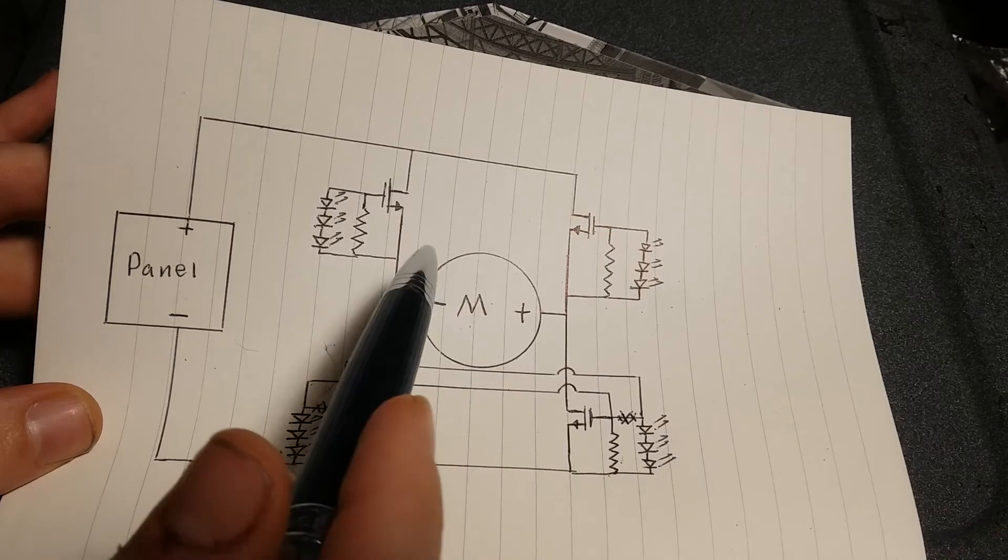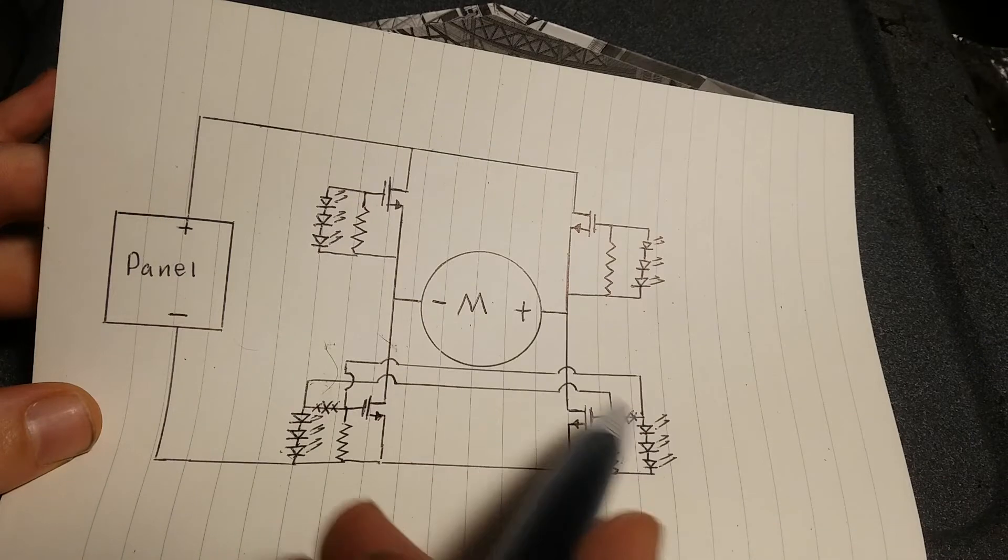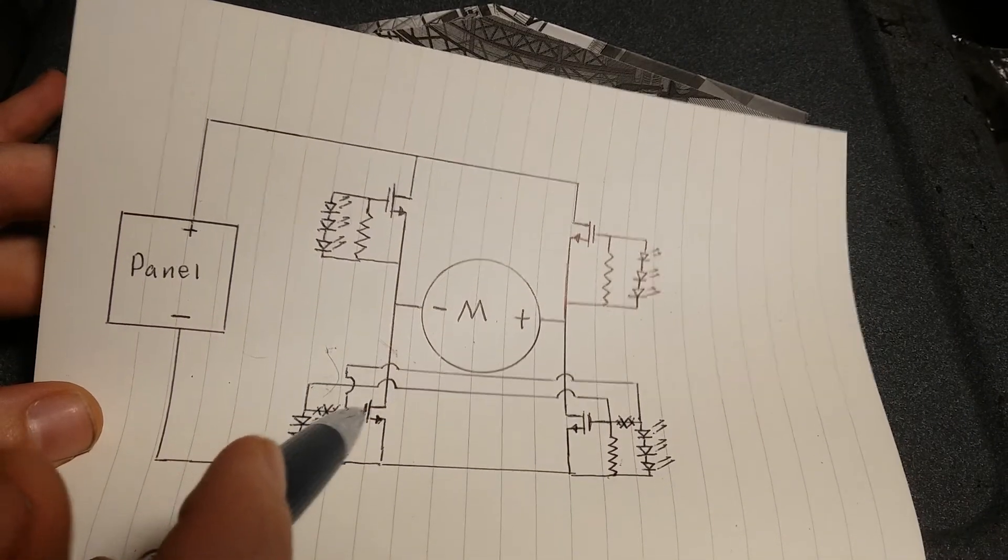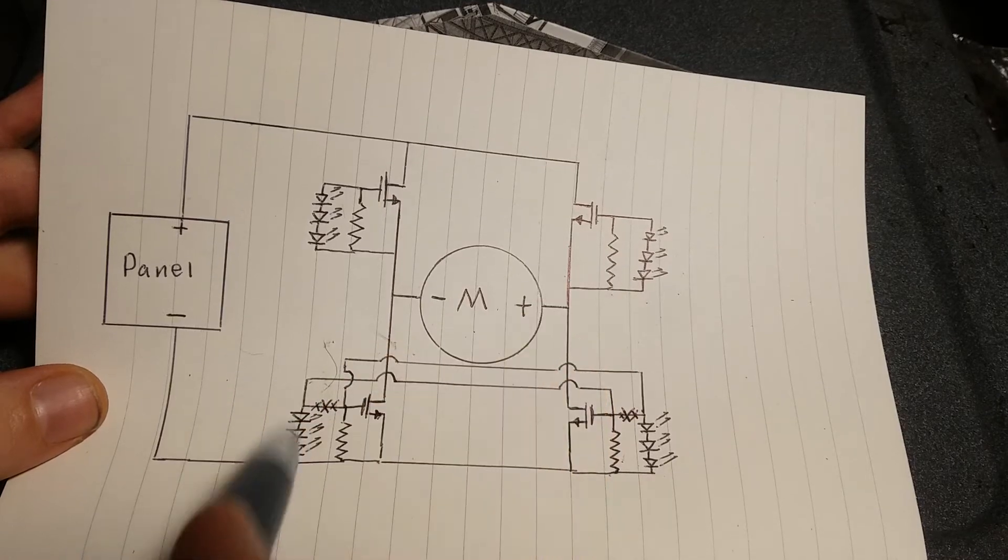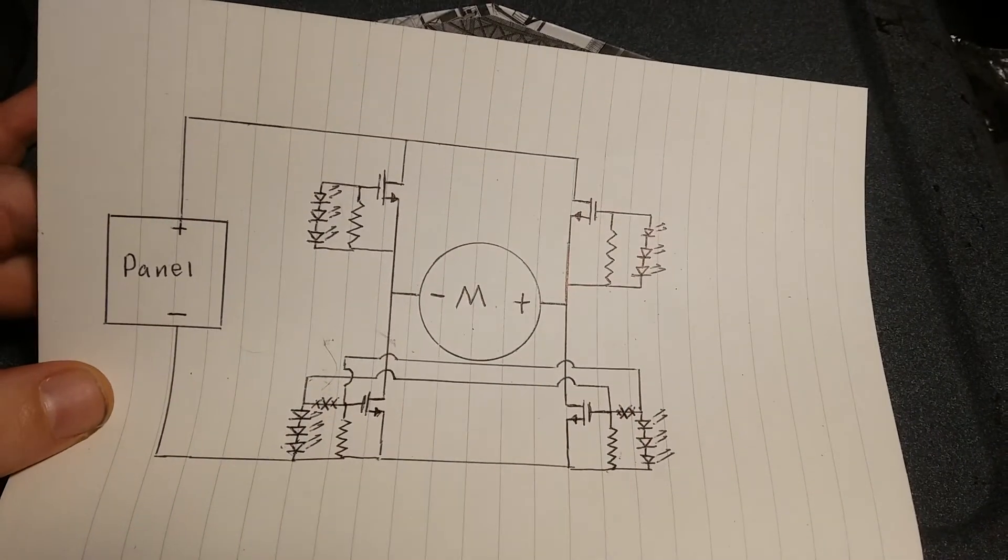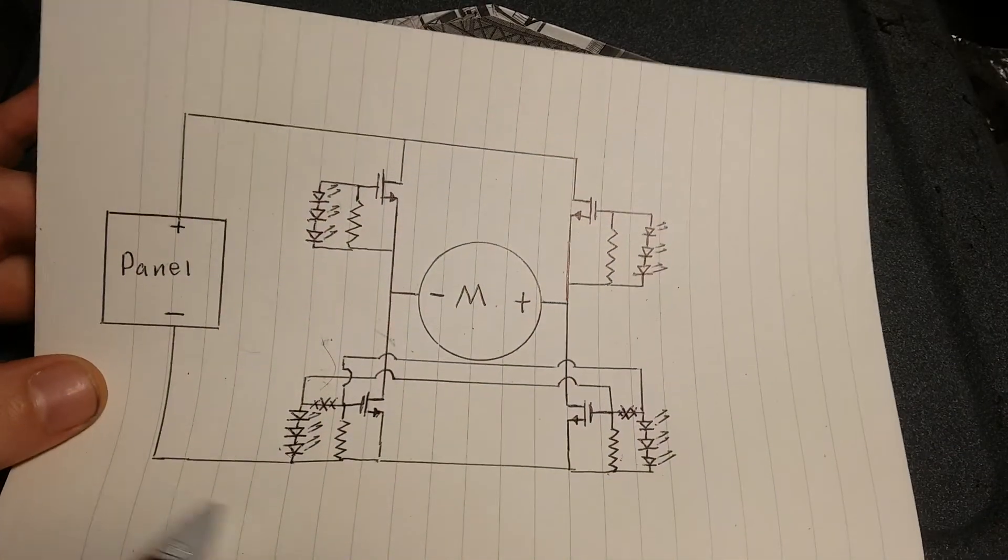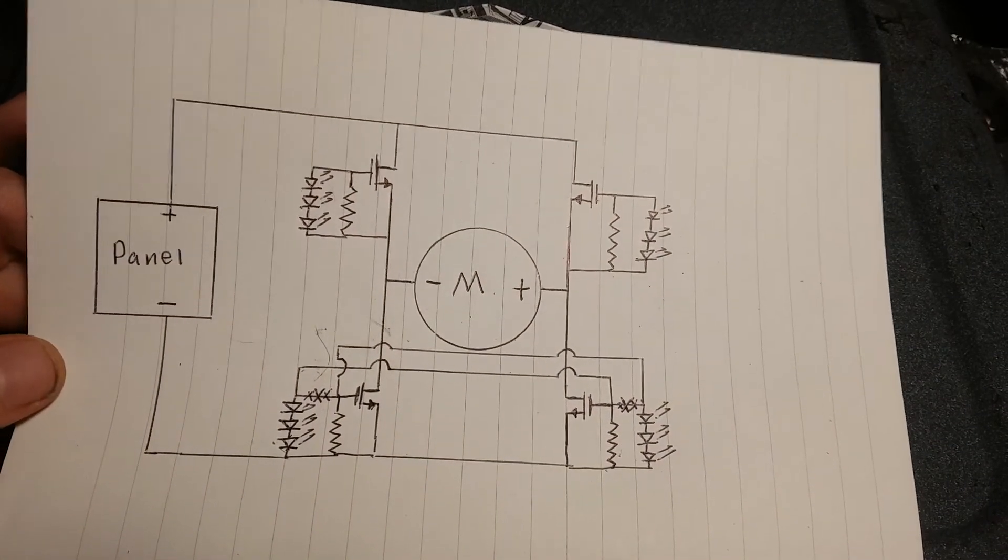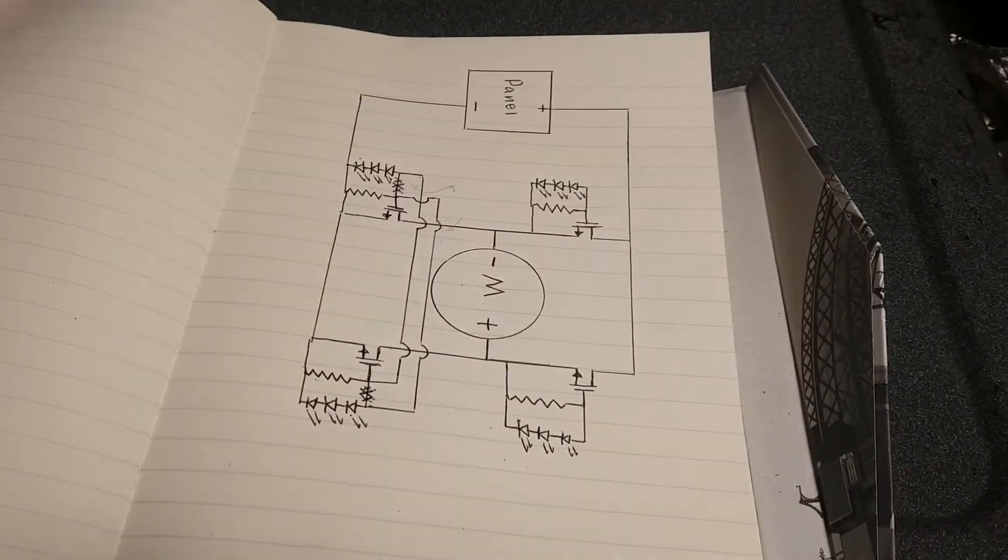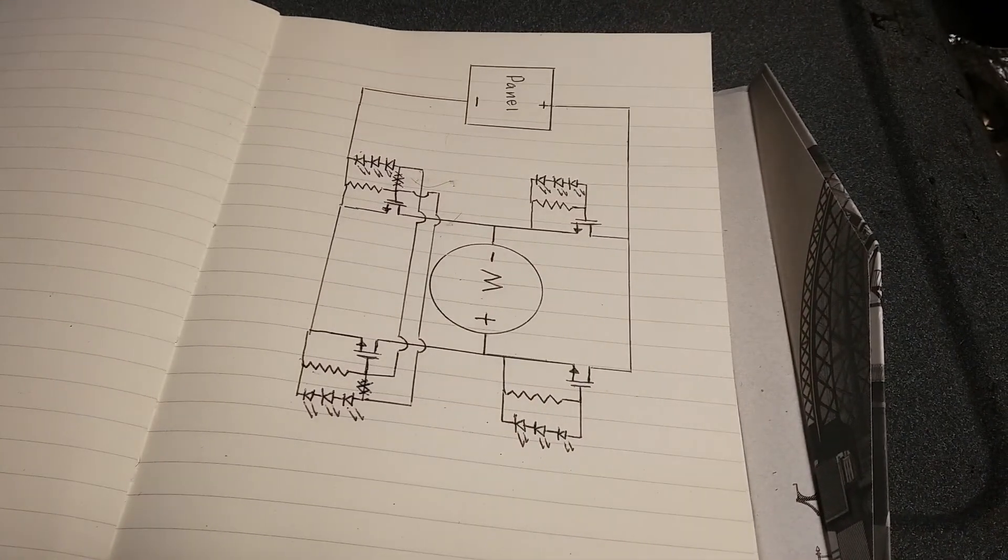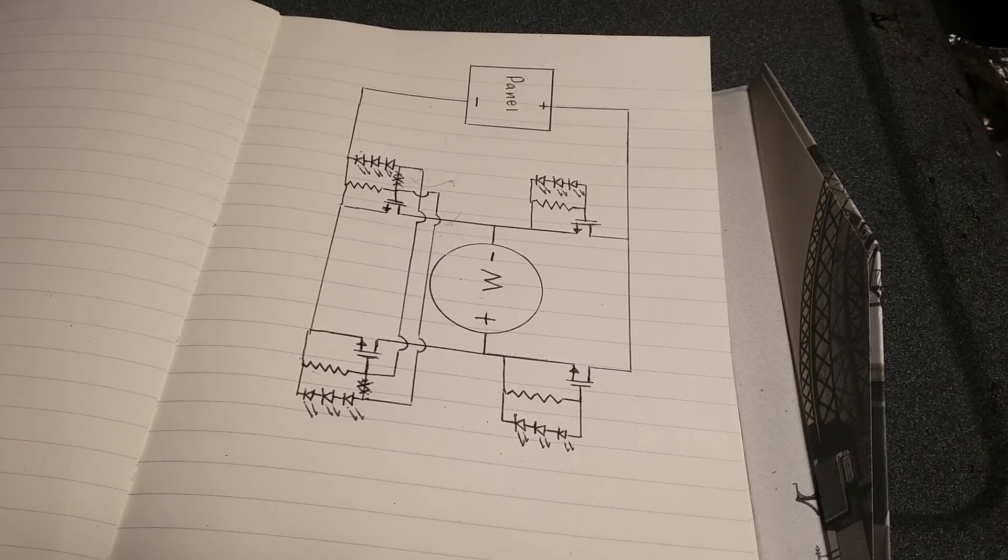And then if the sun moves enough to fall on the other LEDs, obviously it's going to pull the other gates high. And it's just going to go the other direction. Current's going to flow up and through like that. And naturally the extension of that is just to put another circuit with another motor for the other axis. And that should do it.